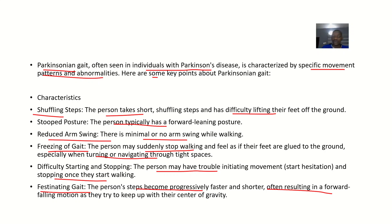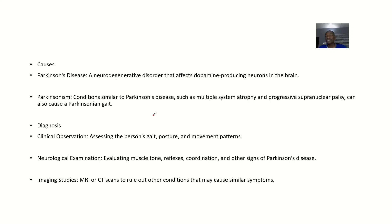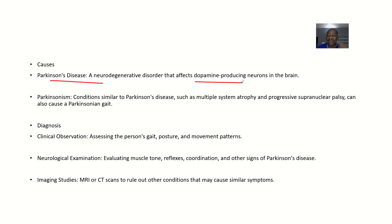The causes: Parkinsonian gait — also called shuffling gait or propulsive gait — is chiefly caused by Parkinson's disease, which is a neurodegenerative condition that affects dopamine-producing neurons in the brain. Parkinsonism — conditions similar to Parkinson's disease such as multiple system atrophy and progressive supranuclear palsy — can also cause Parkinsonian gait.